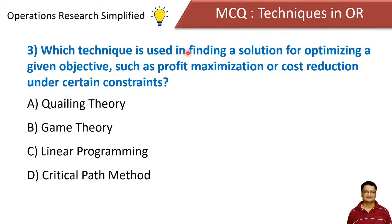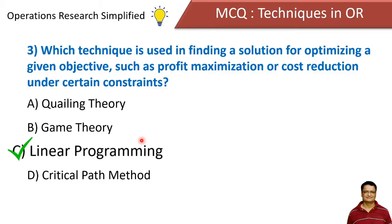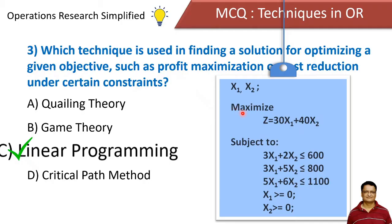Which technique is used in finding a solution for optimizing a given objective such as profit maximization or cost reduction under certain constraints? Options: queuing theory, game theory, linear programming, and critical path method. Correct answer is linear programming. In linear programming, we have a certain objective function and certain constraints, and we optimize the decision variables so as to maximize profit or reduce cost.